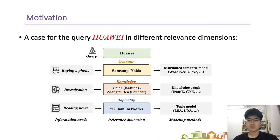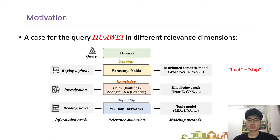The difference between semantic similarity and topical relatedness is the type of contextual information they use. For topic information, we usually use topic models to measure them. Topic models use documents as context, while word2vec uses words within a certain window size as context. So the difference in context makes them capture different types of semantic information. The document-based model like LDA captures semantic relatedness, such as the relation between 'boat' and 'water', while the word-based model like word2vec captures semantic similarity, like the relation between 'boat' and 'ship'.